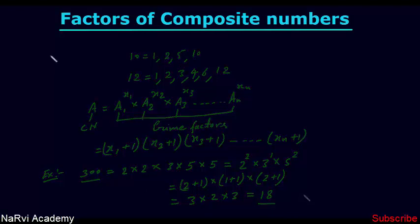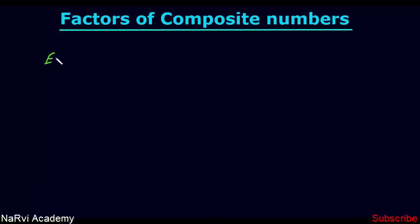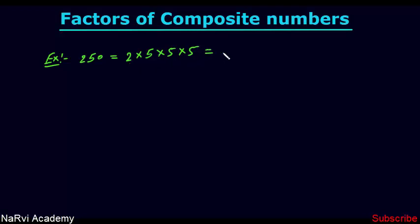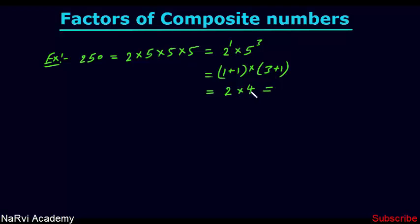Let's take another example. Find the number of factors of 250. First we need to factorize this number into its prime factors: 2 × 5 × 5 × 5. You can see 2 is a prime number and 5 is also a prime number. Now we write it with respective powers: 2¹ × 5³. We just need to add 1 to each respective power: (1+1) × (3+1) = 2 × 4 = 8. This means the composite number 250 has 8 factors.